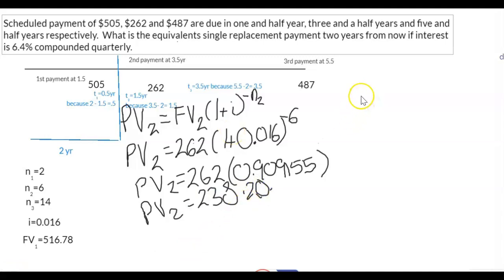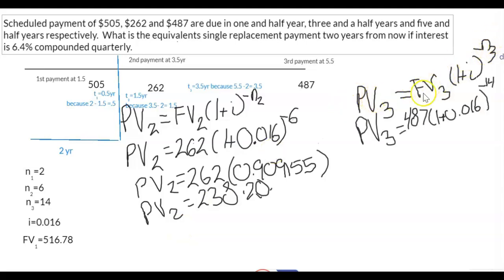So PV3, because this money has to move back to here, back to the focal date. So PV3 equals the future value of the third payment that occurs in the future, times 1 plus i to the power of negative N3 because we're going back in time. We have the formula. Plug the numbers in. So the future value is 487.